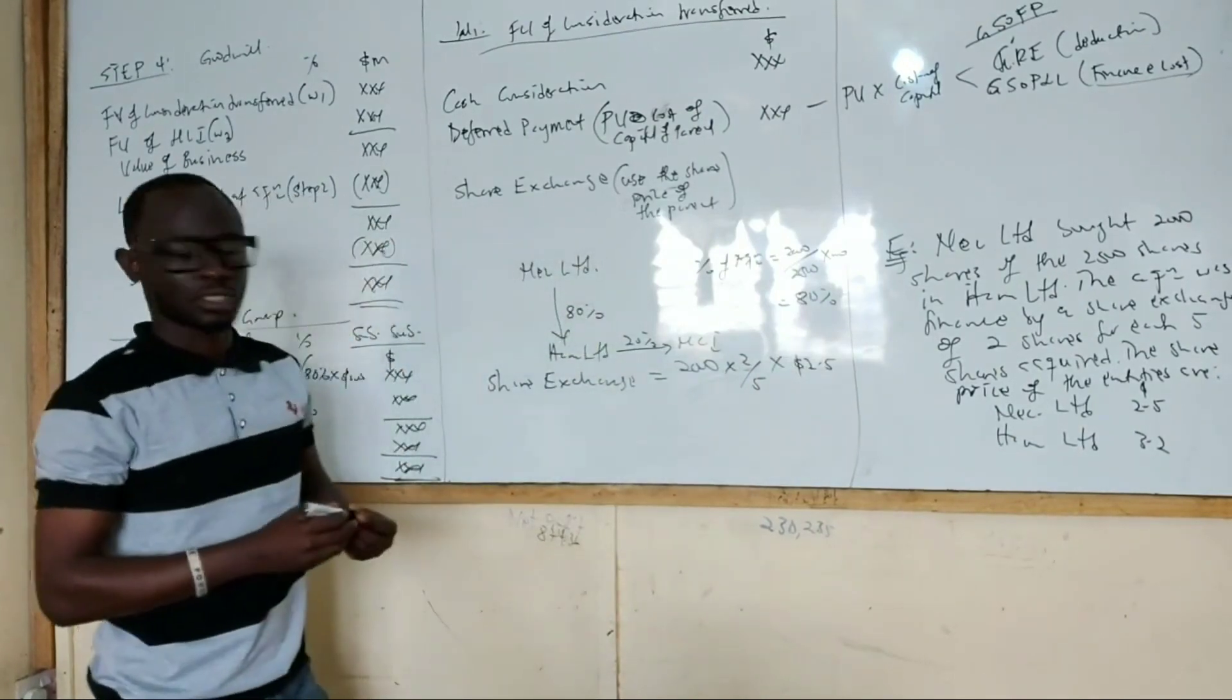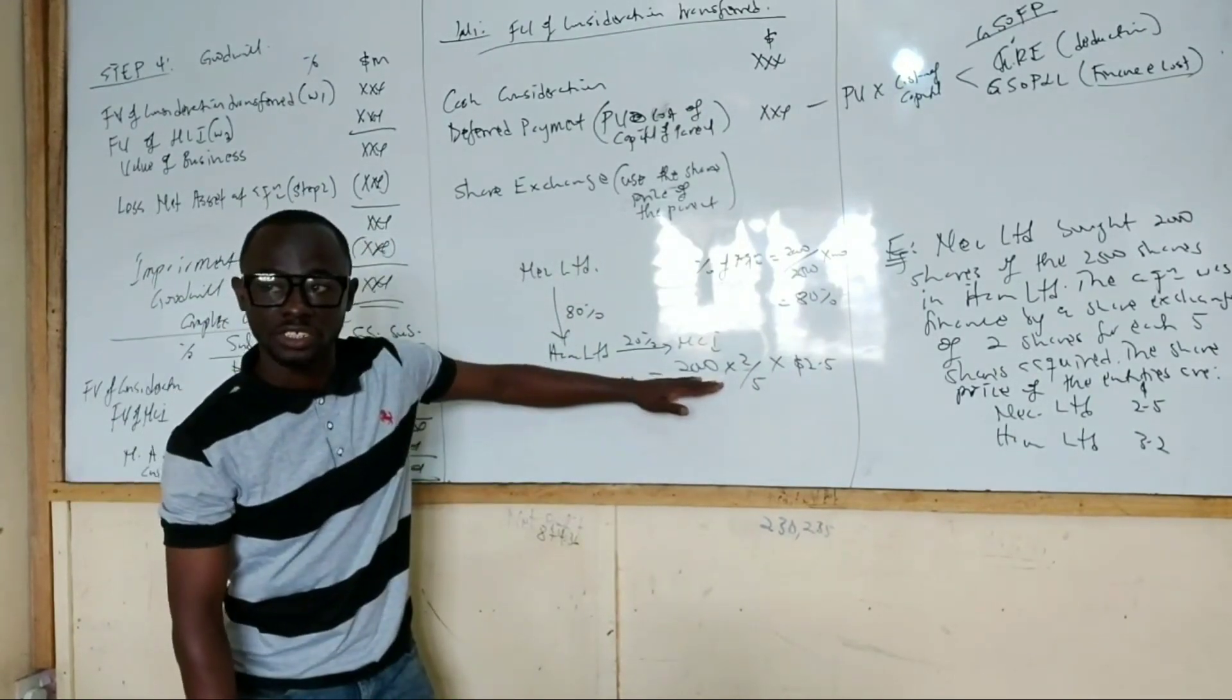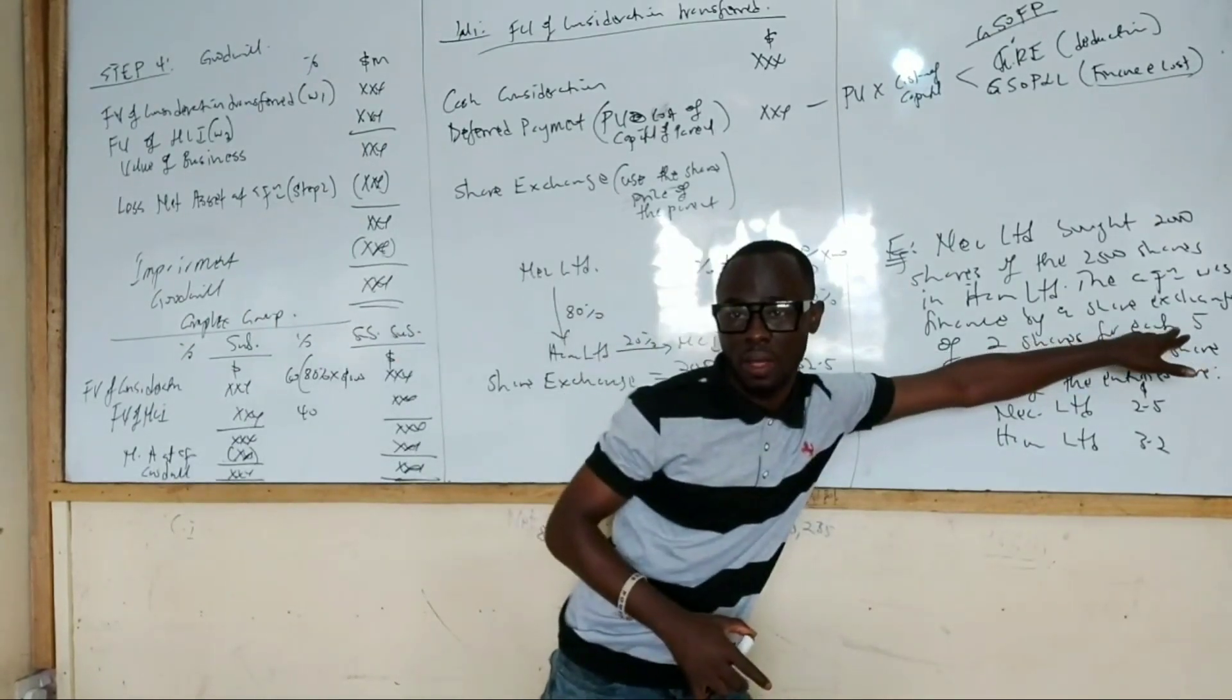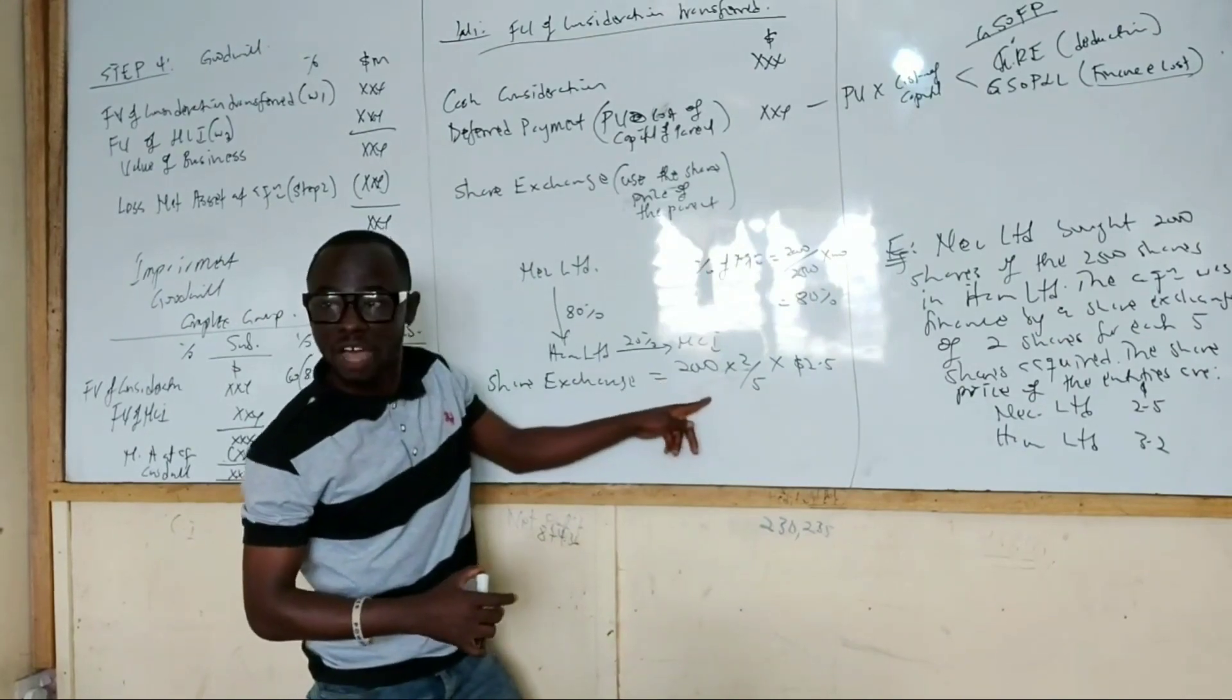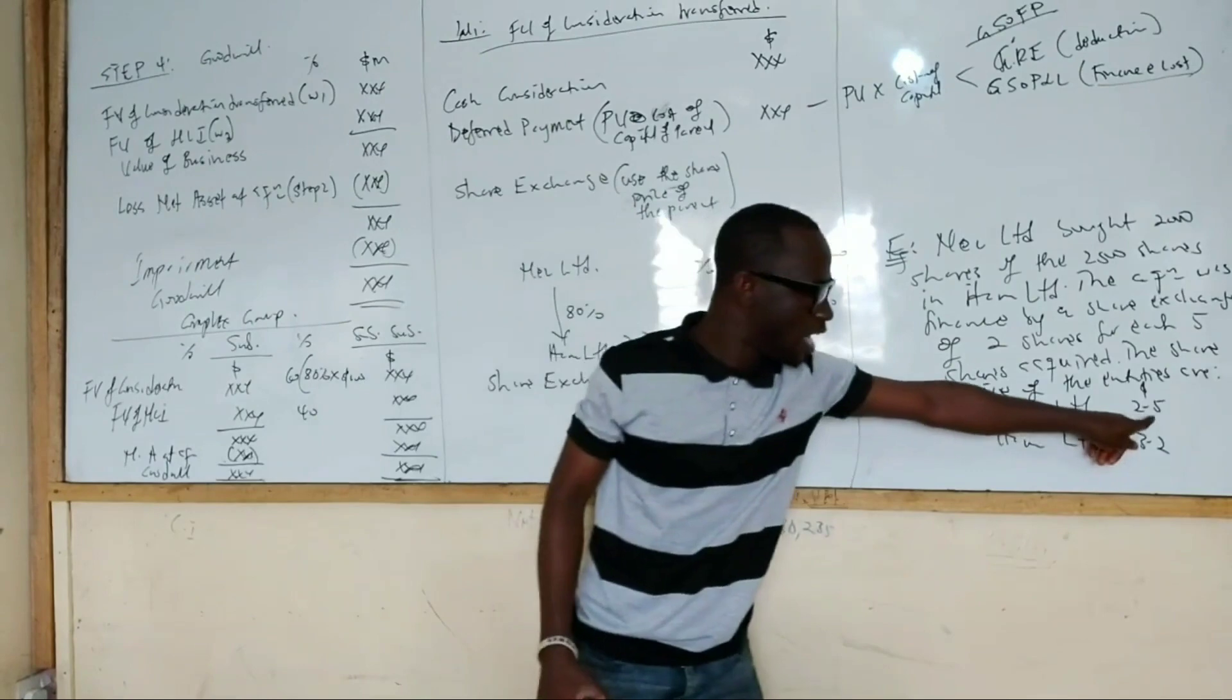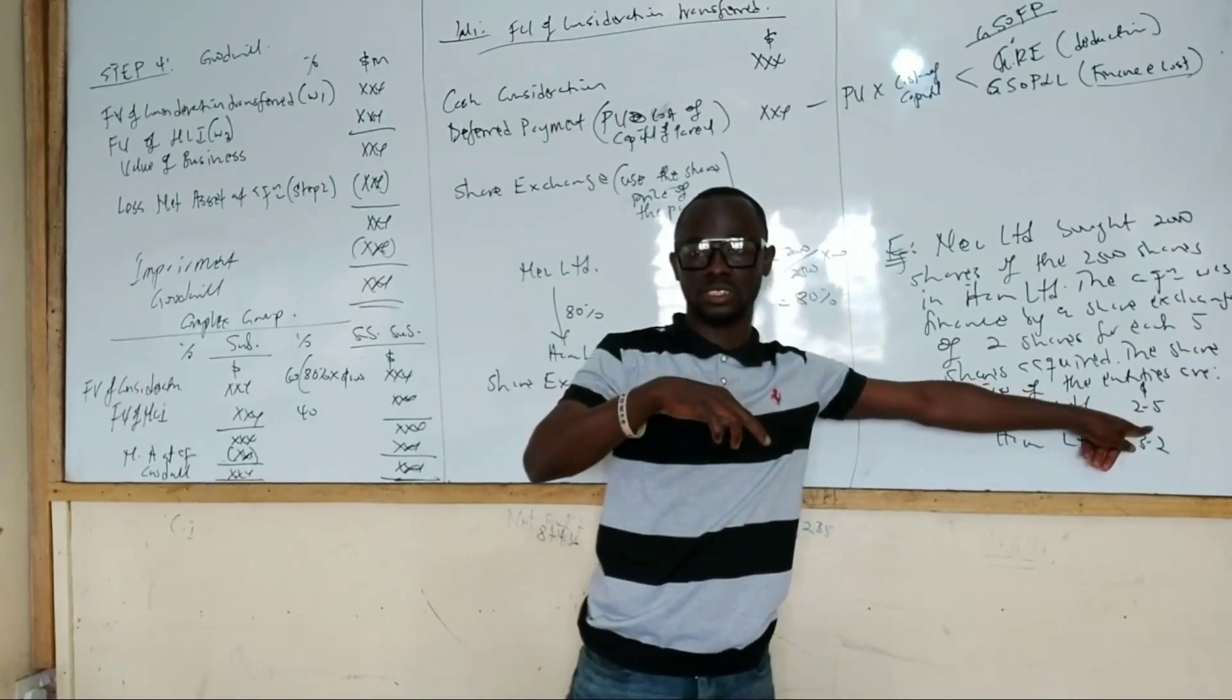We acquired 2,000 shares. We will give you two shares for every five shares we acquired. So it will be 2,000 divided by 5 times 2. Then we multiply it by the parent share price. That's very critical.